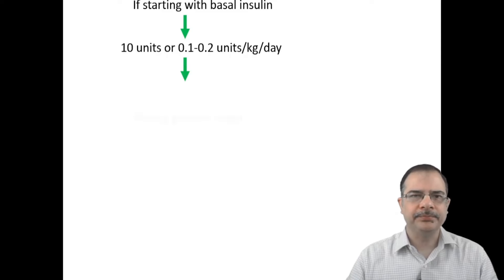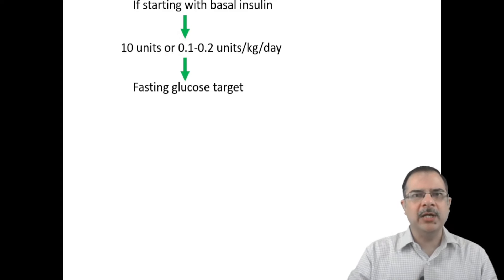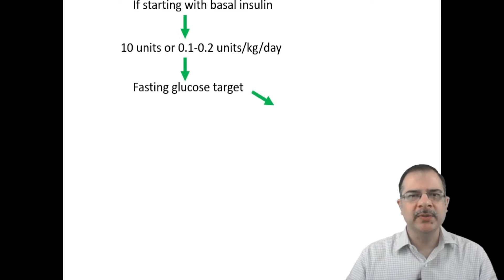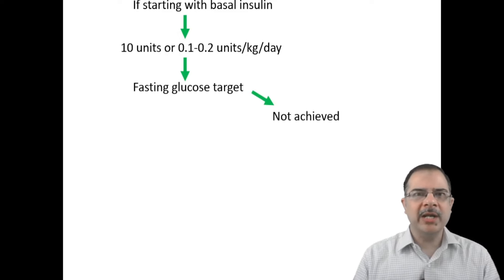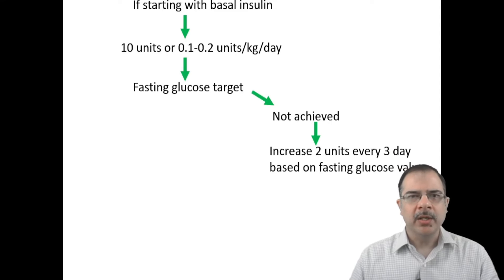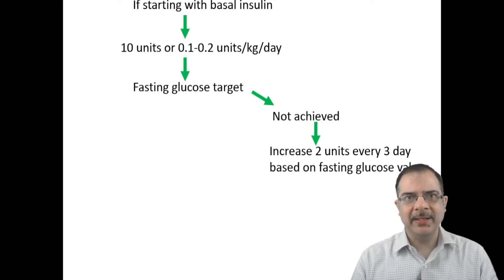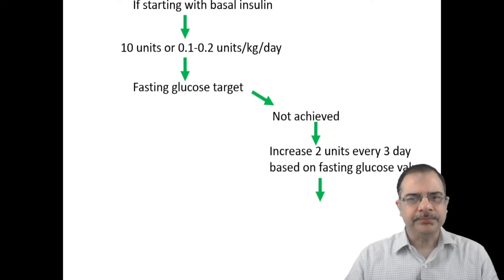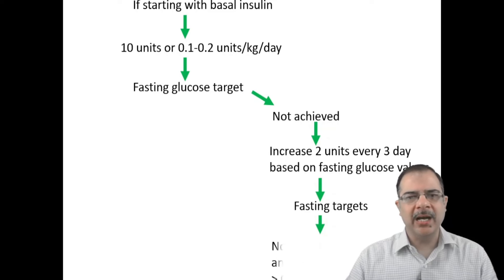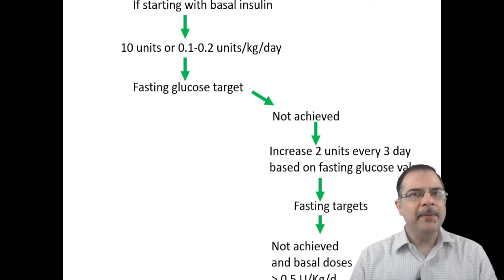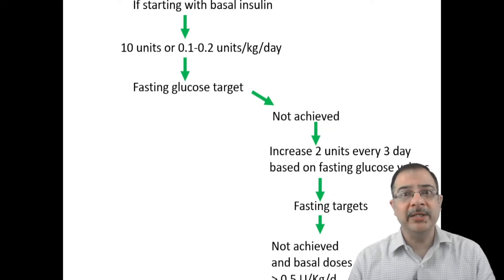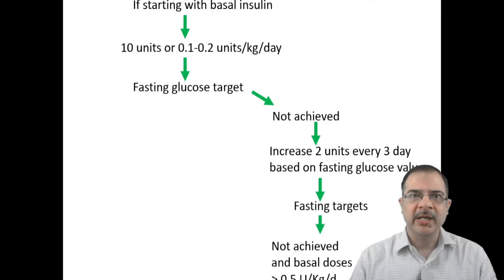Basal insulin can be given at any time of the day, but give it at the same time each day. Monitor fasting plasma glucose values, since basal insulin mainly controls fasting and pre-meal sugars. If fasting glucose targets are not achieved, increase the dose by 2 units every third day. If fasting targets are still not achieved and the basal insulin dose exceeds 0.5 units per kg per day, the next step is to add bolus insulin.